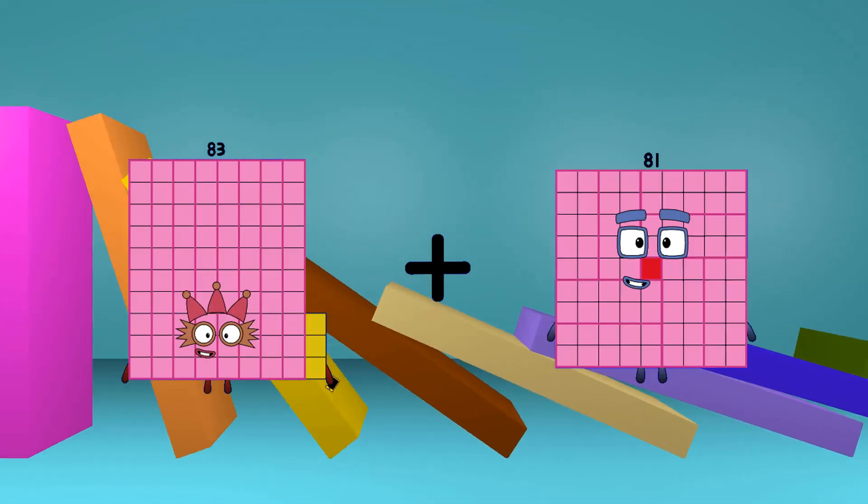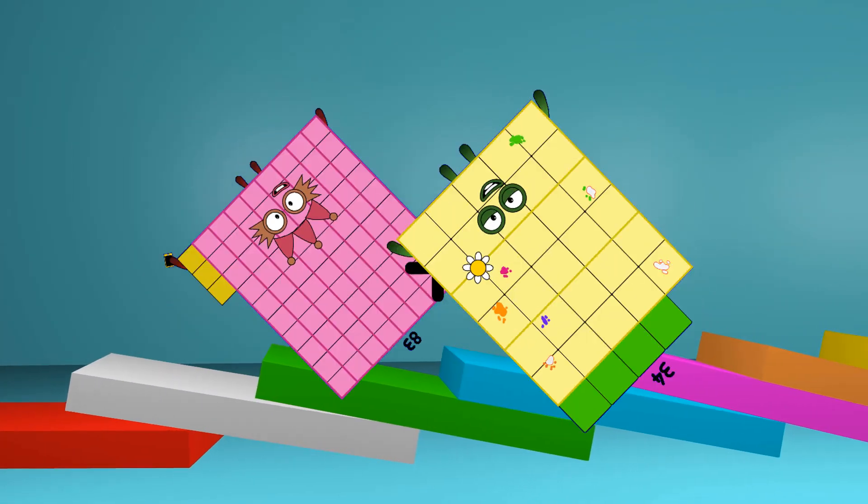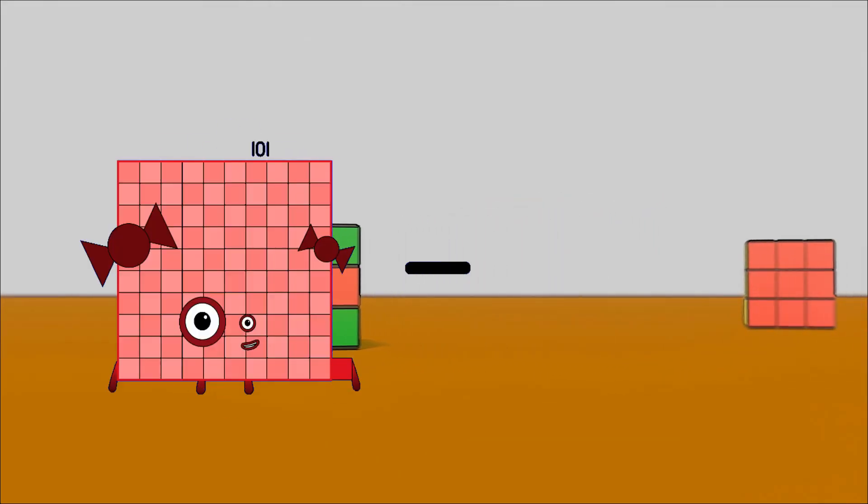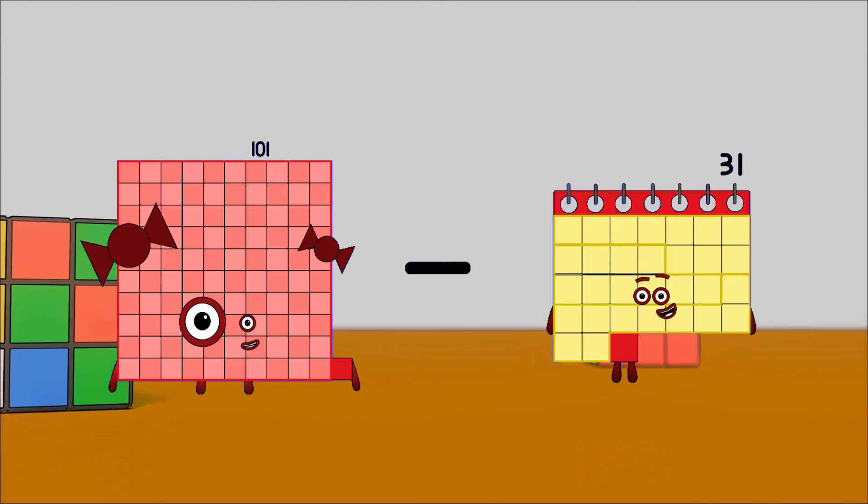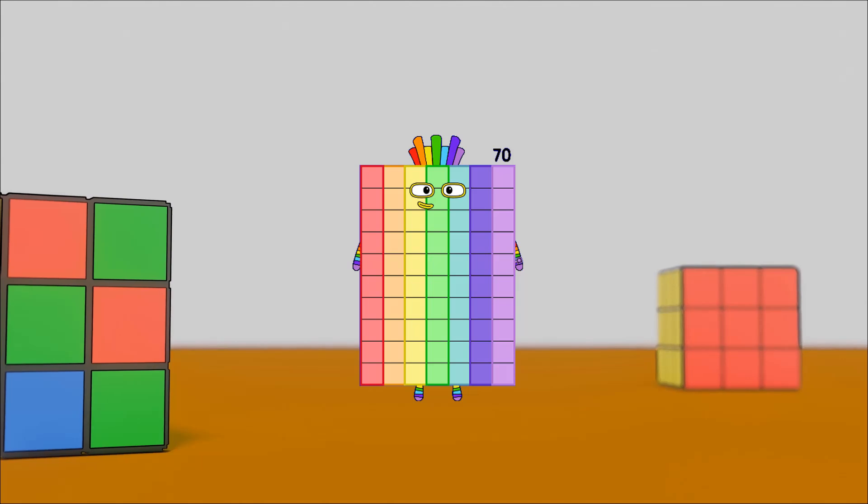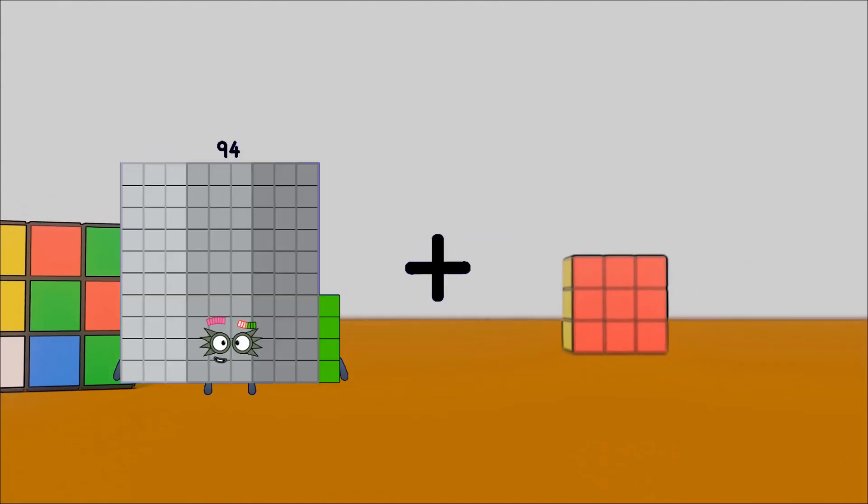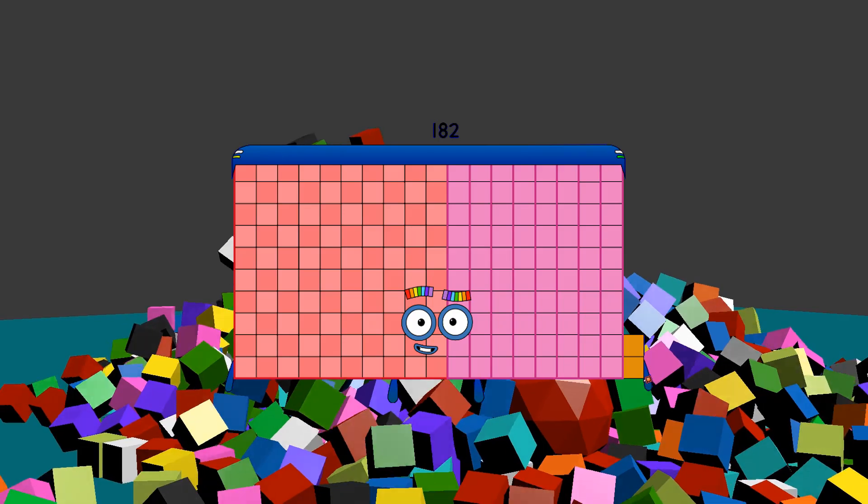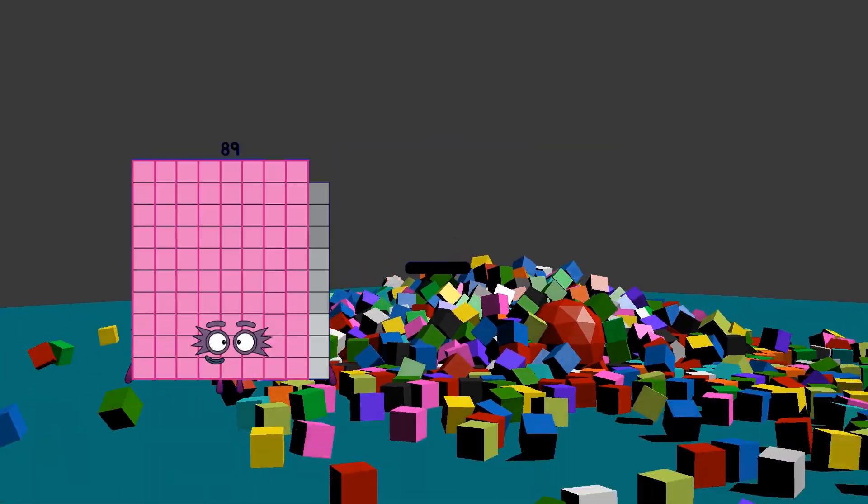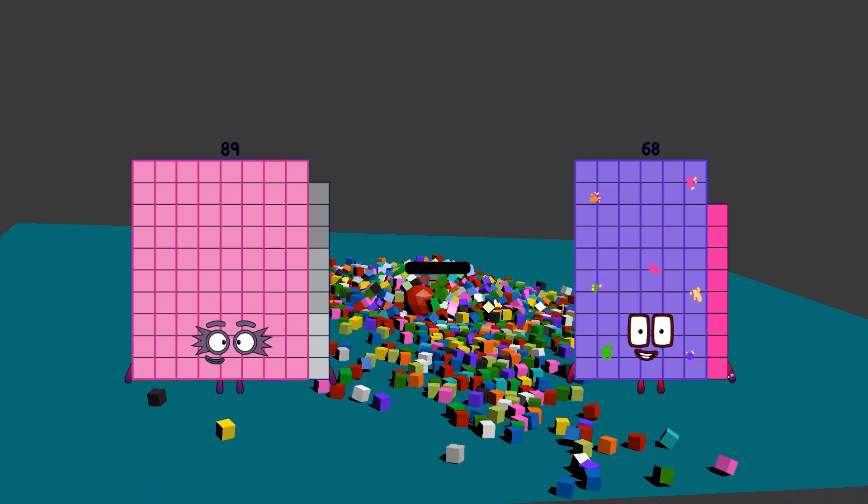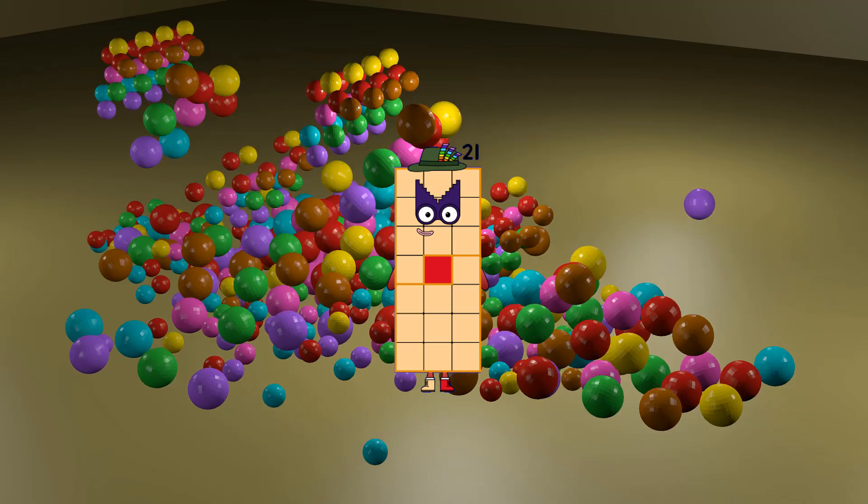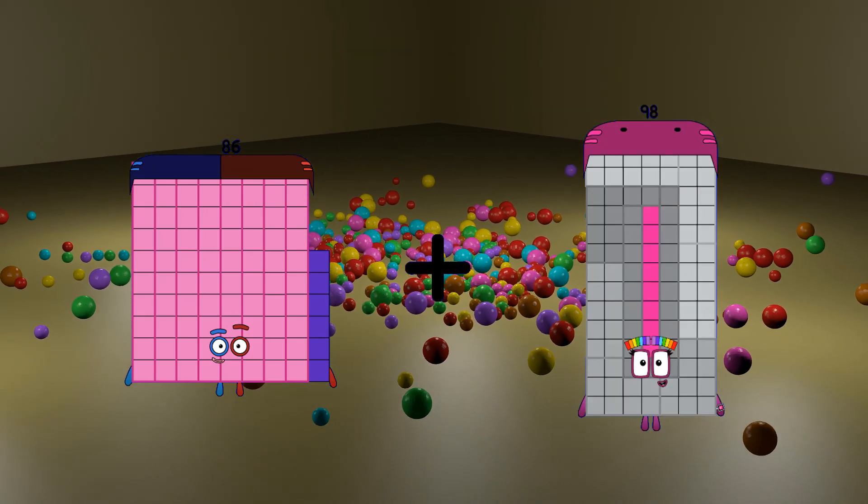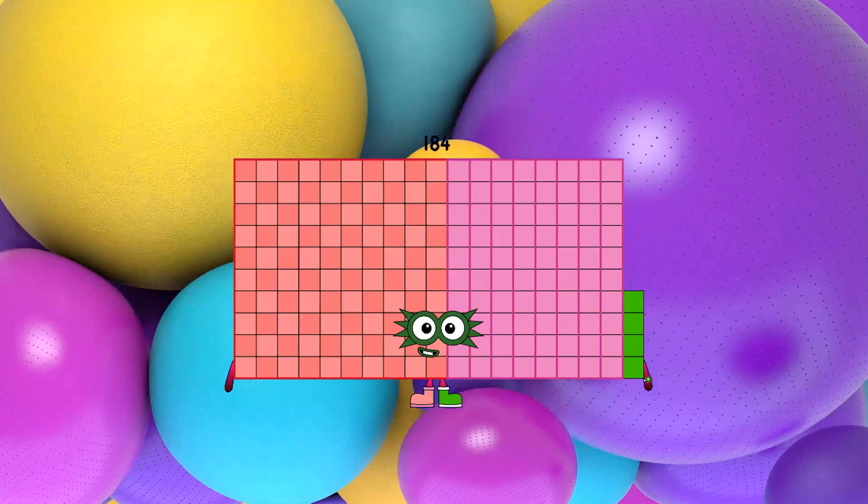83 plus 34 equals 117. 101 minus 31 equals 70. 94 plus 88 equals 182. 89 minus 68 equals 21. 86 plus 98 equals 184.